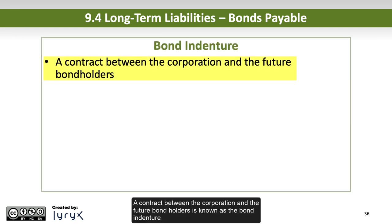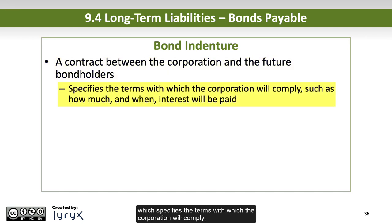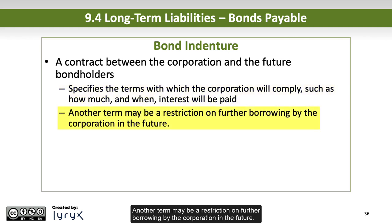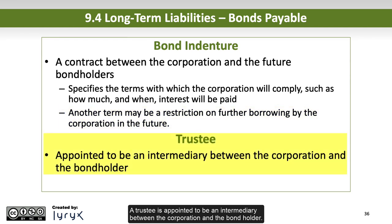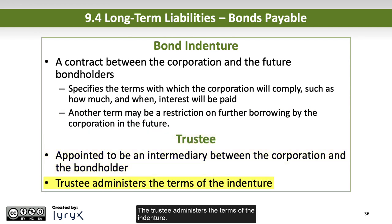A contract between the corporation and the future bondholders is known as the bond indenture, which specifies the terms with which the corporation will comply, such as how much and when interest will be paid. Another term may be a restriction on further borrowing by the corporation in the future. A trustee is appointed to be an intermediary between the corporation and the bondholder, and the trustee administers the terms of the indenture.